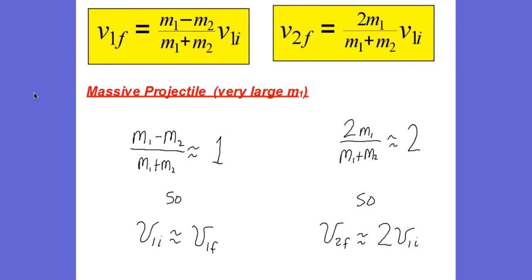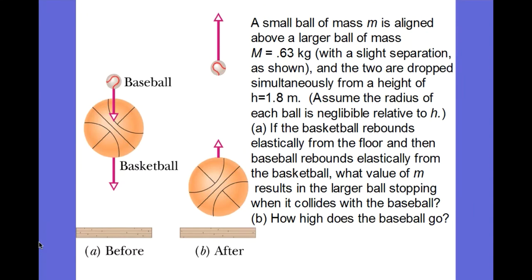Lastly, let's look at a very massive projectile — very large M1. When M1 is very large, the ratio M1 minus M2 over M1 plus M2 is approximately one, so the projectile's final velocity is about the same as its initial velocity — hitting a small target doesn't affect it much. For the target, the ratio 2M1 over M1 plus M2 is approximately two, so the target gets launched at about twice the speed of the incoming projectile. I have a similar situation to share from the textbook.